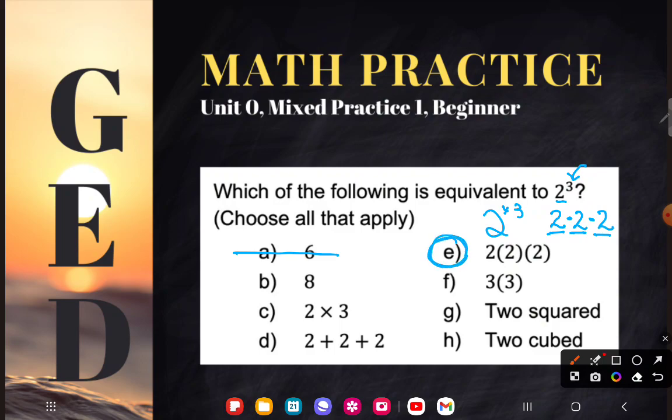Now let's go ahead and simplify this to see what it would come to if we were to simplify. So two times two is four, and four times two is eight. So clearly b is one of the right answers.